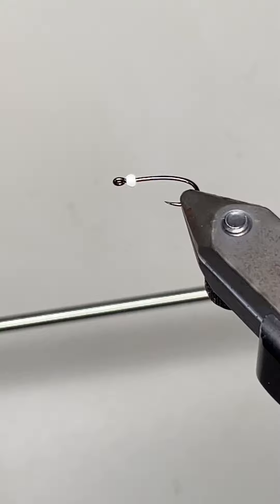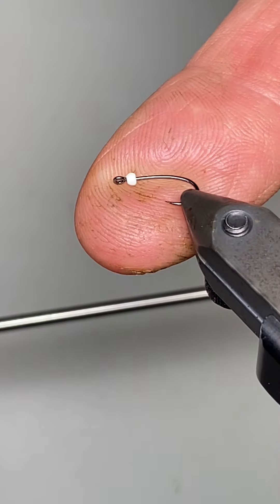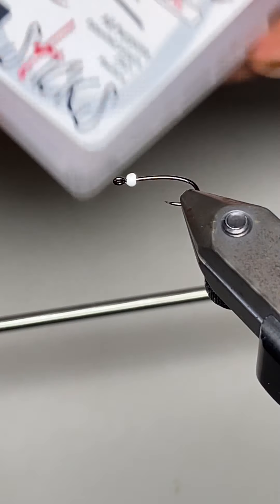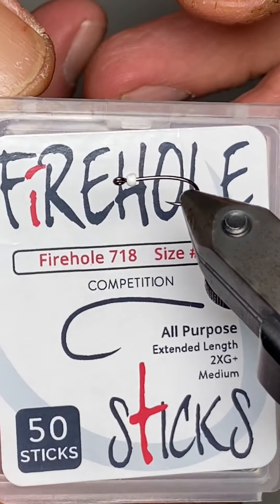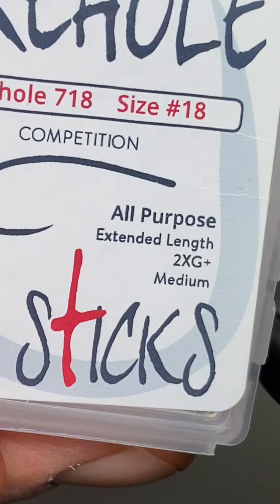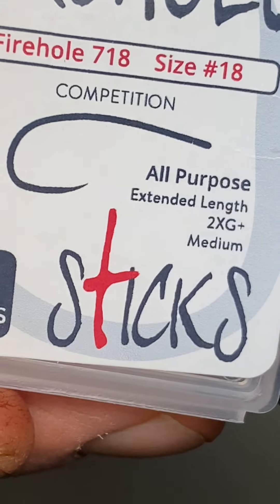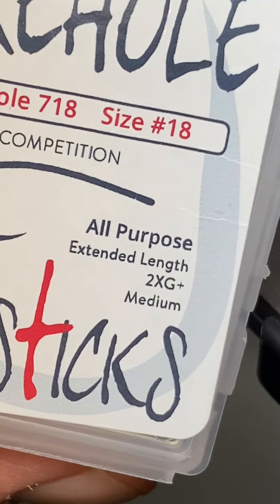So this is a size 18. I'm going to tie a black and red Chronimid, but this is a size 18. You can see it's quite small and I'm using a Firehole 718. This is a 2x long medium wire hook. They have a very nice wide gape and they're great Chronimid hooks.